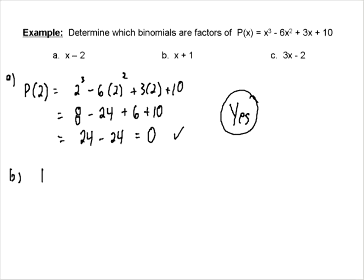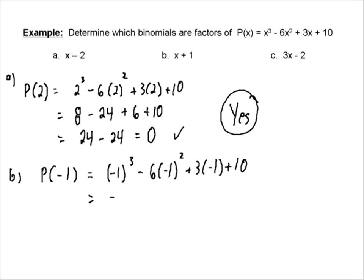Now let's try B. In this case we're going to put negative 1 in. We're just plugging it in — if it turns out to be a factor, then the remainder is going to be equal to zero. So we're going to have negative 1 cubed minus 6 times negative 1 squared plus 3 times negative 1 plus 10. Negative 1 cubed is negative 1. Negative 1 squared is 1, times negative 6 is negative 6, minus 3 plus 10. That's all equal to zero. So yes, that's a factor as well.